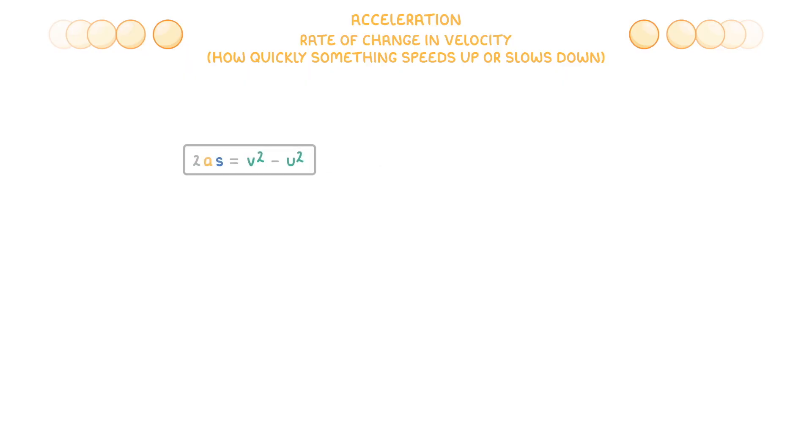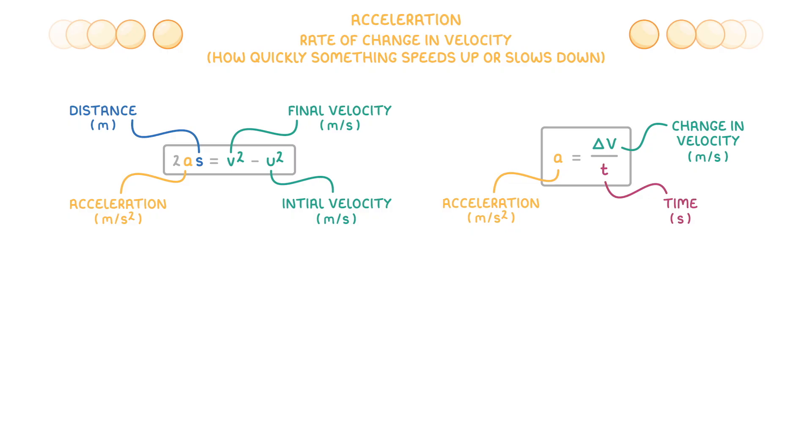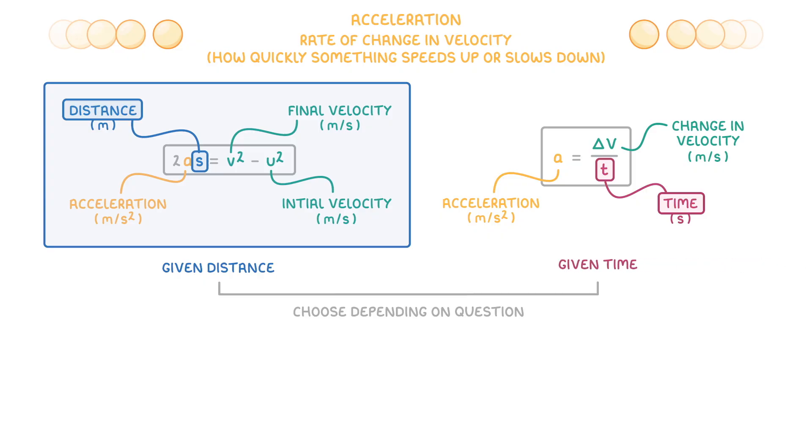The last thing we need to cover is this second acceleration equation. We've already seen most of these letters, but now we have distance as well, which is measured in meters. If we compare this to our original equation, you can see that the main difference is that this new one includes distance instead of time, so you'll have to choose which of these to use depending on the question. If you're given the unit of distance, then you need to use this one, but if you're given time instead, then you have to use the original one.